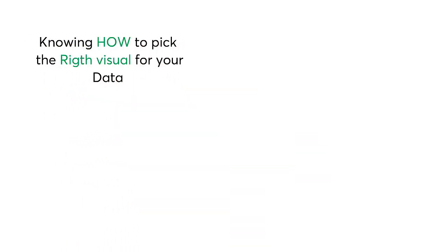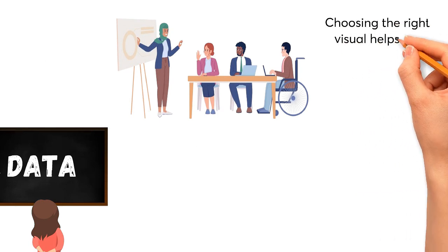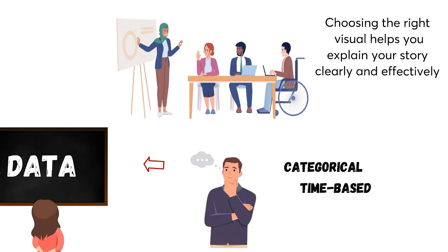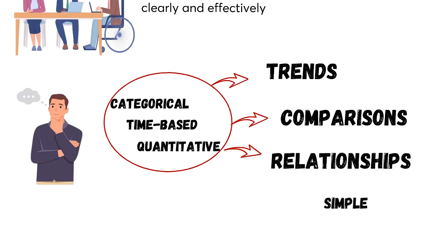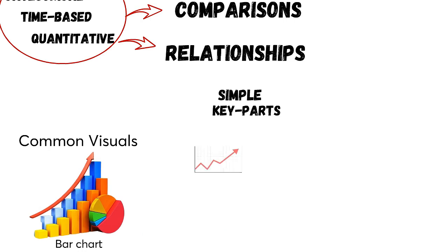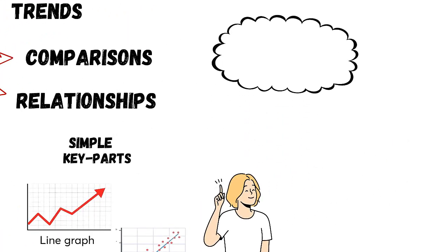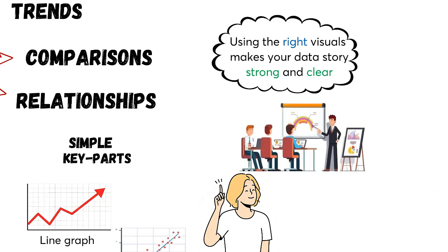Chapter 2, titled Choosing an Effective Visual, talks about knowing how to pick the right visual for your data. The way you show data can greatly affect how people understand and use it. Understand what kind of data you have — categorical, time-based, or quantitative — since each type needs different visuals. Choose visuals based on what you want to show, like trends, comparisons, or relationships. Keep your visuals simple and focus on the key parts of your data to avoid confusion. Learn about common visuals like bar charts, line graphs, and scatter plots, and know when to use each one.